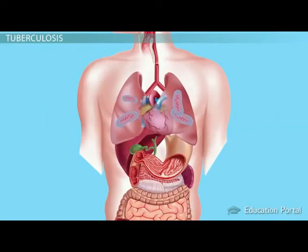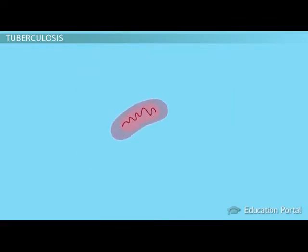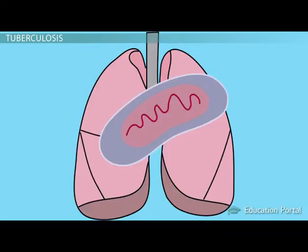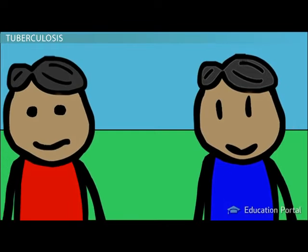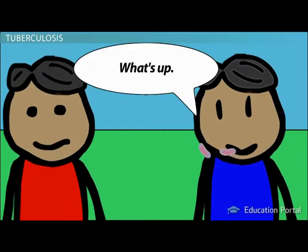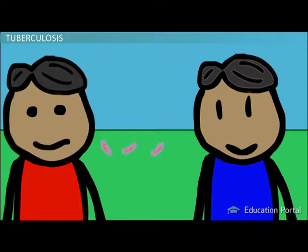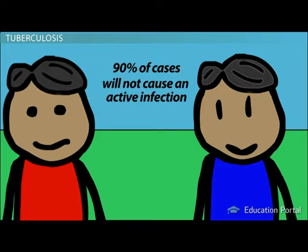The fact that this is a respiratory disease, meaning it is associated with air, should make perfect sense. Mycobacterium tuberculosis enters through the lungs, which help you breathe in air. If a person has an infection of tuberculosis and they cough or sneeze or even talk around you, they may spread this bacterium. Once you inhale it, it will enter your lungs and in 90% of cases will thankfully not cause an active infection.